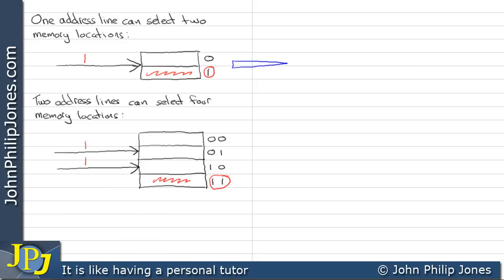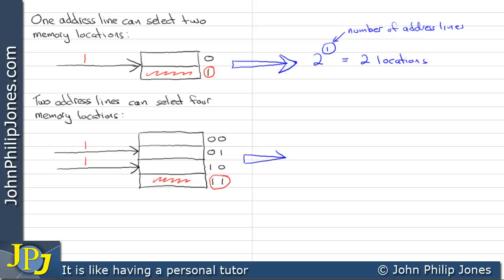Looking at this example, we can see there is one address line. To find how many locations, we raise two to the number of address lines — so two to the one gives us two locations. In the second example with two address lines, we raise two to the power two, and consequently we have four locations.